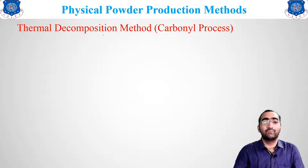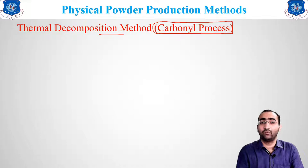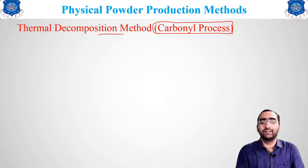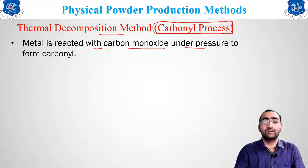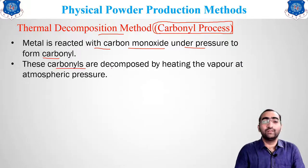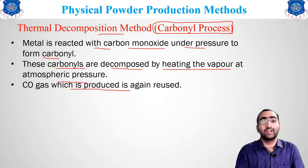The second physical method is thermal decomposition, also known as the carbonyl process. When metal reacts with oxygen it forms an oxide; with hydrogen, a hydride. Similarly, when metal reacts with carbon monoxide under pressure, the material formed is known as a carbonyl. The carbonyls are then decomposed by heating the vapor at atmospheric pressure, and the CO gas produced is again reused.